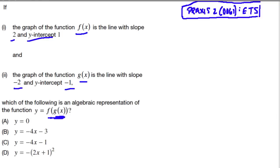So let's talk about f of x. Well, f of x is the line with the slope of 2, so m is 2, and the y-intercept b equals 1. It's pretty straightforward.